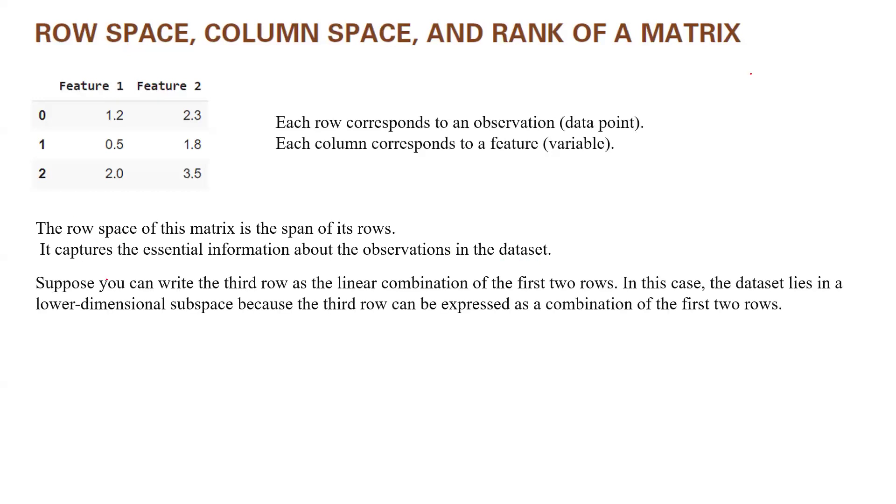Now, suppose you can write the third row as a linear combination of the first two rows. So basically you can find C1 and C2. Then you can write 2 and 3.5 as a vector, as a linear combination of these two vectors. In this case, the data set lies in a lower dimensional subspace because the third row can be expressed as a combination of the first two rows.